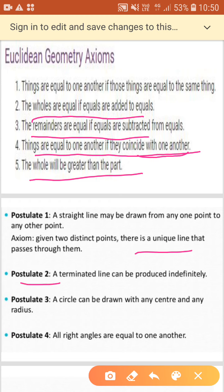Postulate two, it says that a terminated line can be produced indefinitely. What is a terminated line? Terminated line means which stops. So it is a line segment. And if we extend line segment on both the sides indefinitely, we get a line. So postulate two, this property also you know that if we extend a line segment indefinitely in both the directions, we get a line.